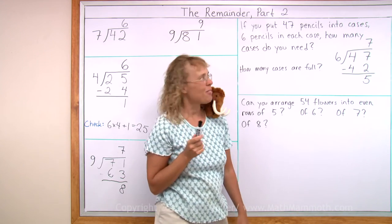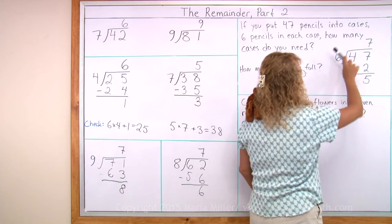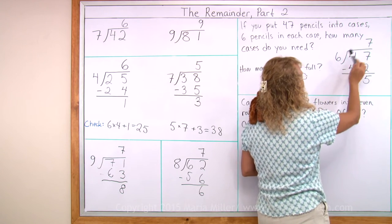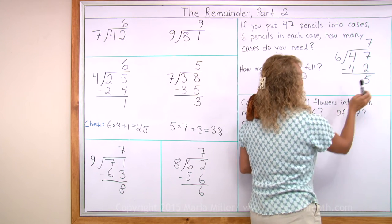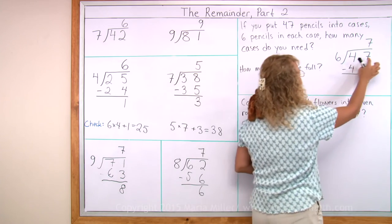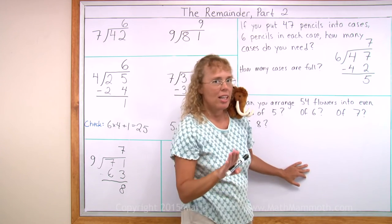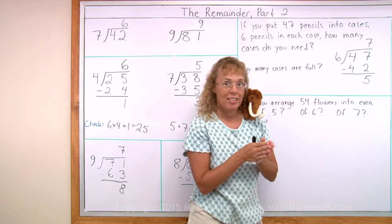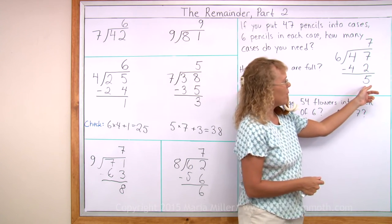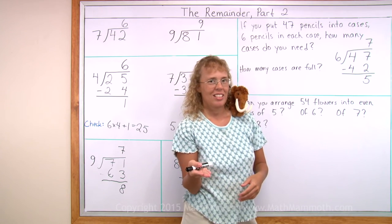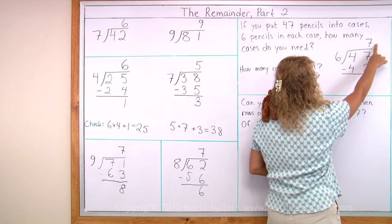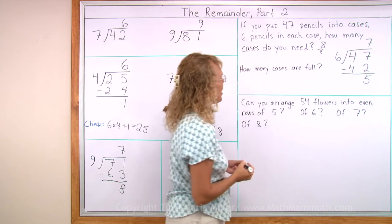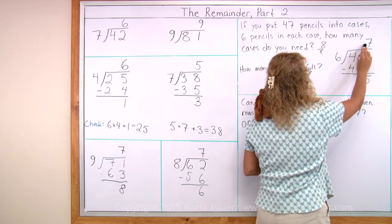So we've done the division. Now we need to answer the question. How many cases do you need? You need to think carefully now. When 47 divided by 6, we get 7 and 5 left over. This remainder 5 means 5 pencils. We have 47 pencils, and we put 6 pencils in each case, and there will be 5 pencils left over. This here would give us the number of cases that are full. And then these 5 pencils would need to go into a case too. So instead of saying we need 7 cases, we actually need one more case. We need 8 cases. And how many cases are full? 7 cases are full.